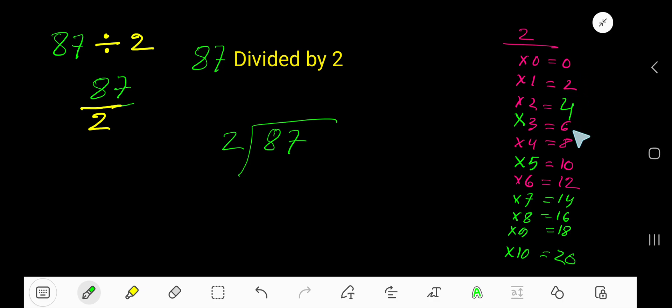2 goes into 8 how many times? Look, 2 to 8, 4 times, right? 4. Now multiply 4 times 2 is 8. Subtract, you are getting 0.